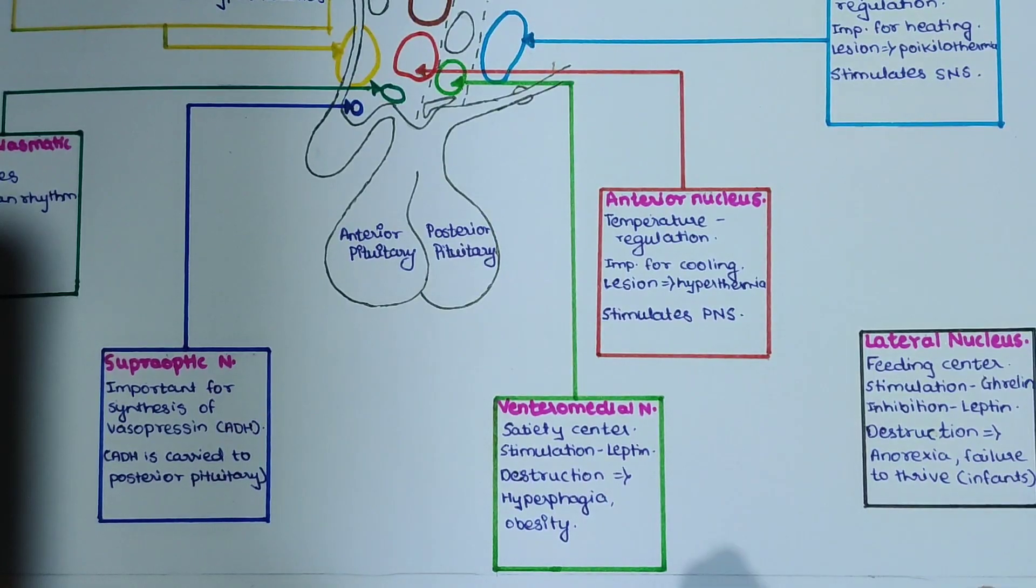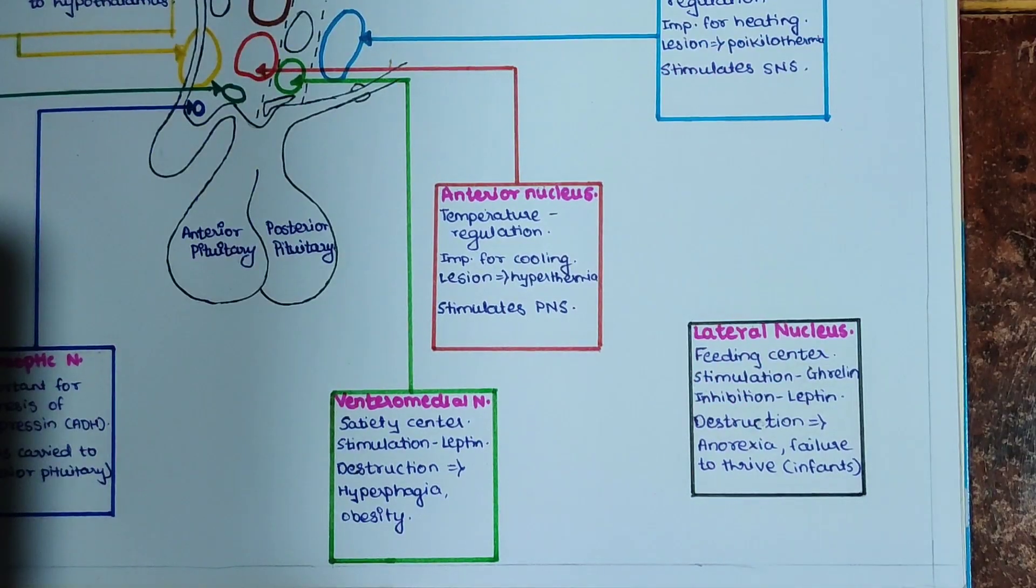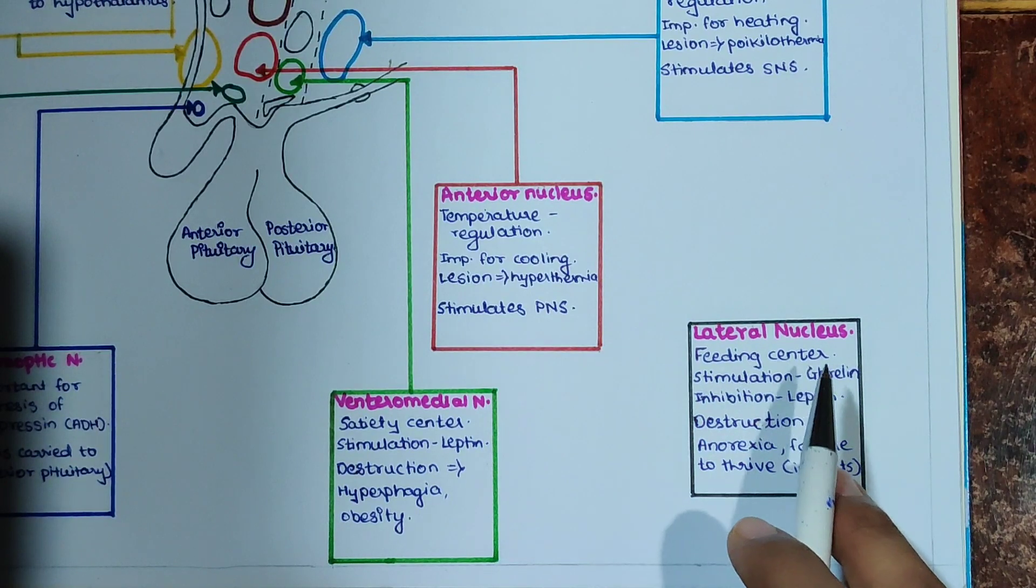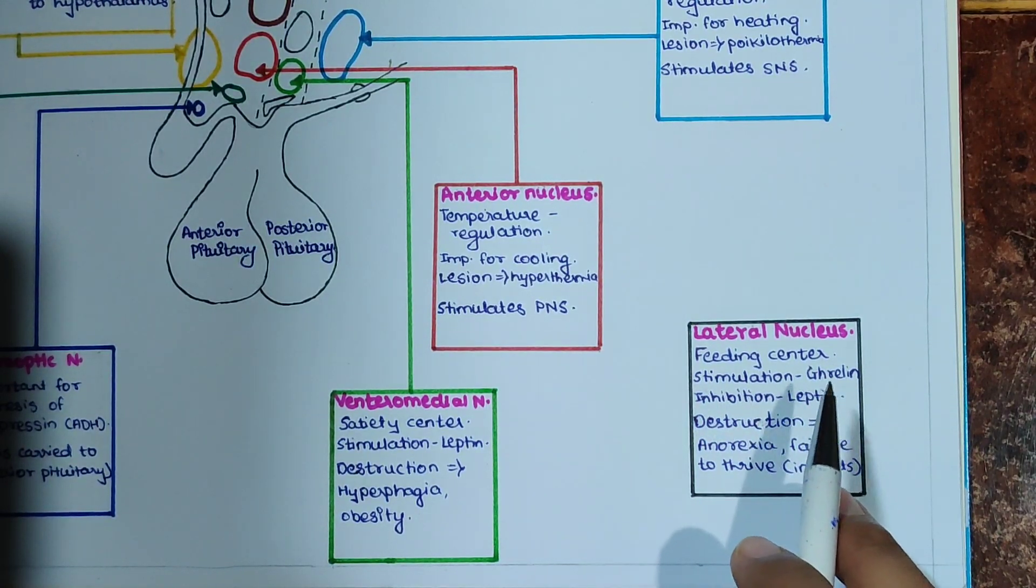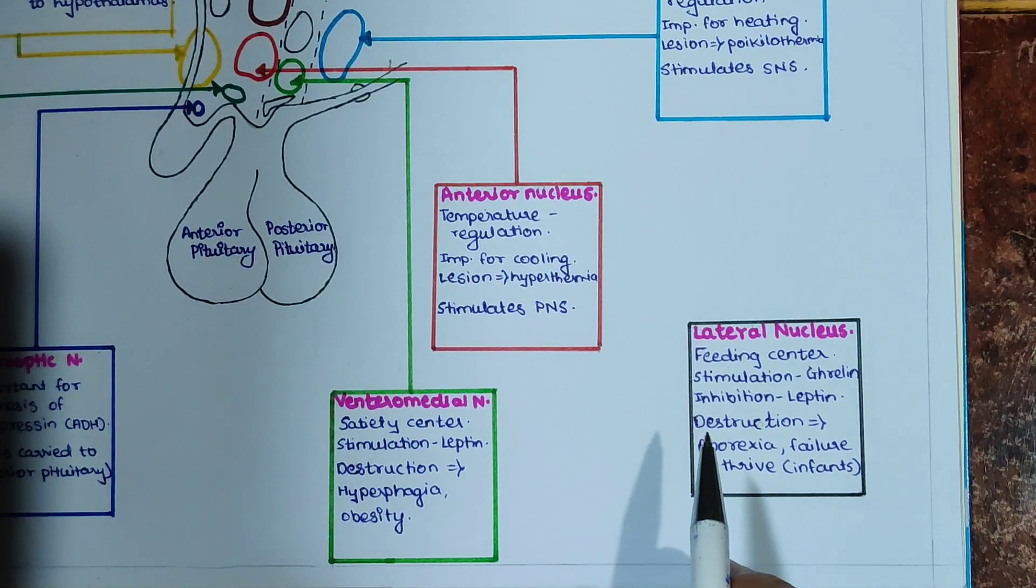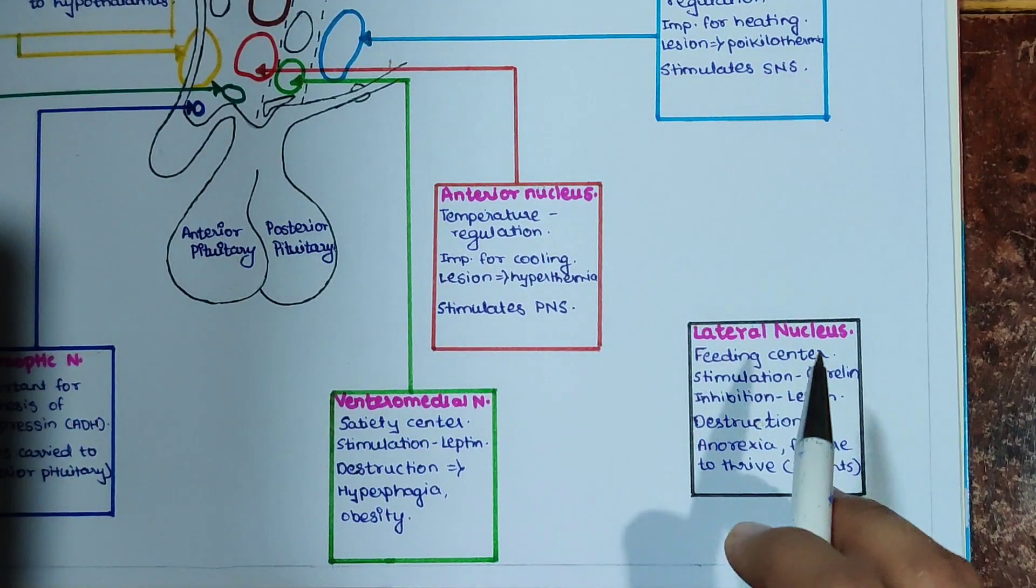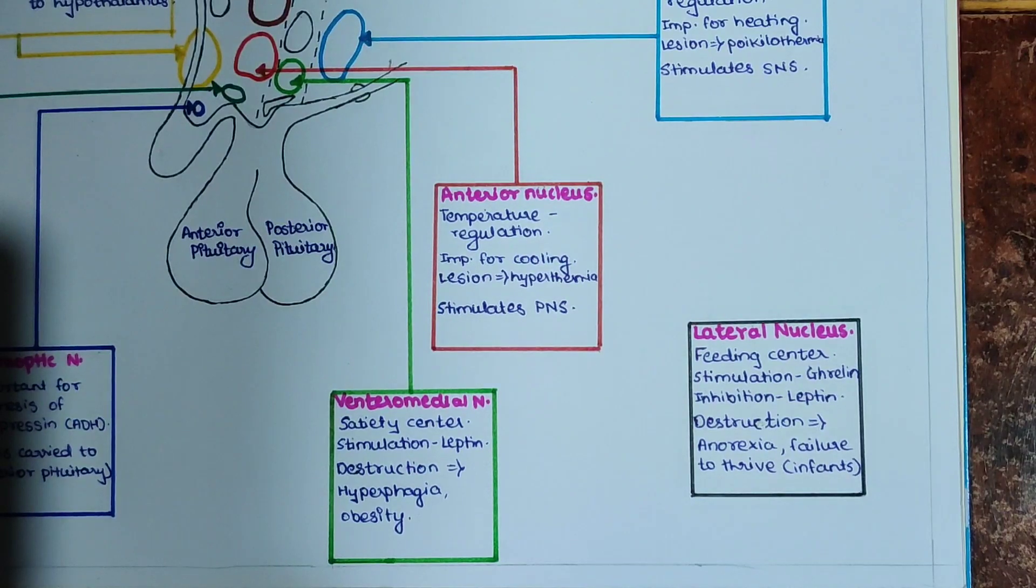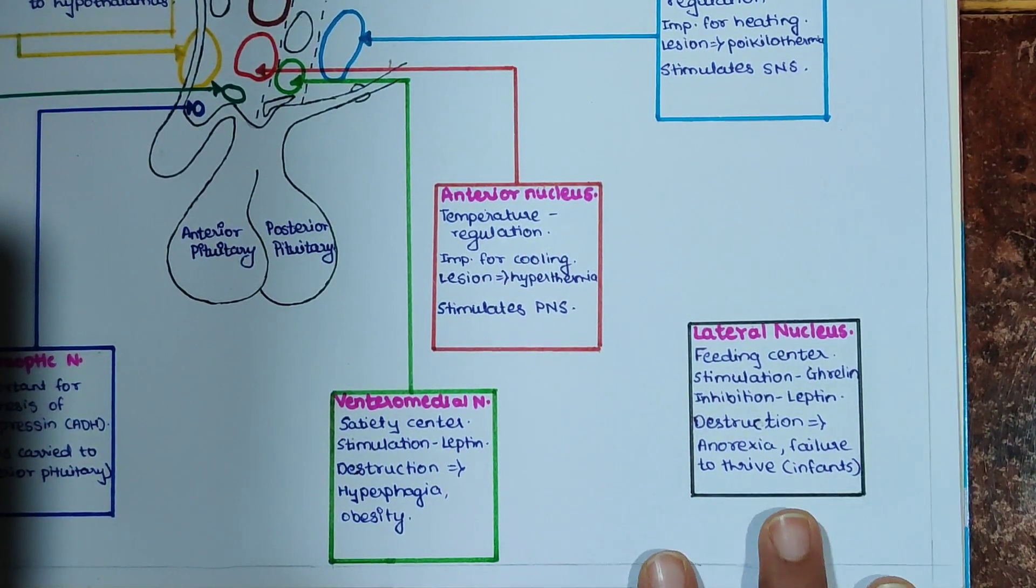Lateral nucleus is not shown in the diagram but it is very important. It is a feeding center and is stimulated by ghrelin and inhibited by leptin. When there is destruction of lateral nucleus, there will be anorexia and failure to thrive in infants.